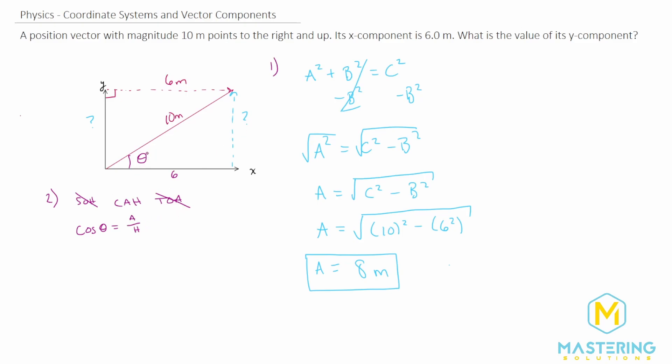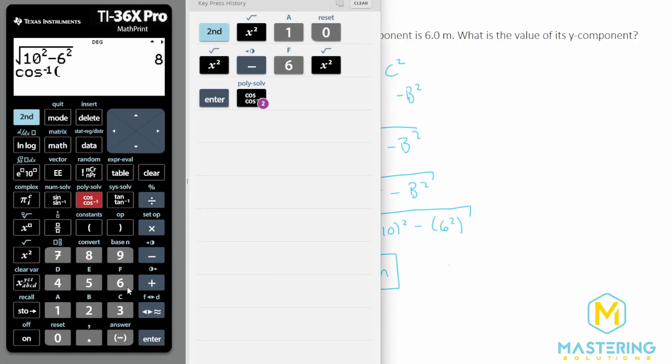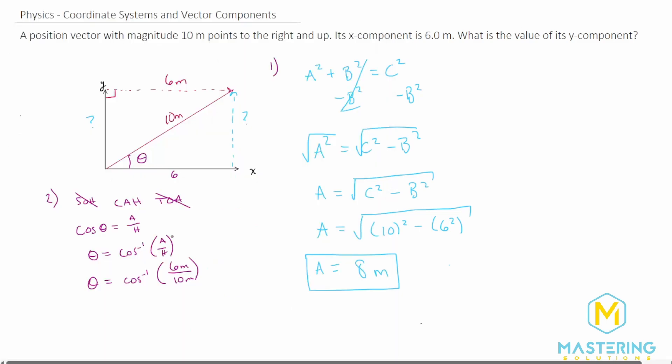We're trying to solve for theta. We want to solve for theta by taking the inverse cosine of both sides which will give us theta is equal to the inverse cosine of adjacent over hypotenuse. We have both of these values so theta will be equal to inverse cosine of 6 meters over 10 meters. So inverse cosine of 6 over 10 gives us 53.1 degrees.